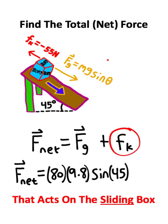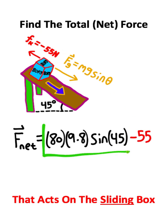Now from here I need to add the force of friction, which is negative 55 newtons, it's given in the problem. So we have 80 times 9.8 times the sine of 45 minus 55.